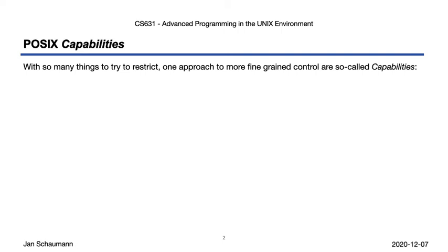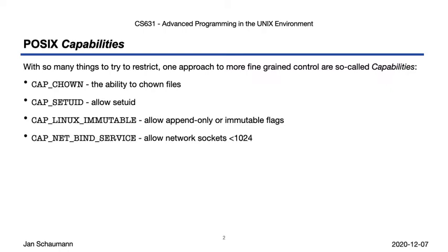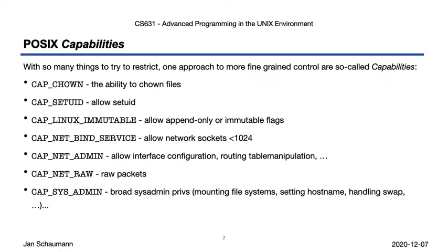For example, the following capabilities may be defined: CAP_CHOWN, the ability to chown files; CAP_SETUID, to allow setuid; CAP_LINUX_IMMUTABLE, to allow append-only or immutable flags we've seen in a previous video. We have a restriction to allow network sockets to bind to a port below 1024, or a restriction to allow interface configuration and routing table manipulation. We have a capability to allow the use of raw packets, and more collective capabilities such as CAP_SYS_ADMIN, which provides broad system administration privileges such as mounting filesystems, setting hostnames, handling swap, etc.